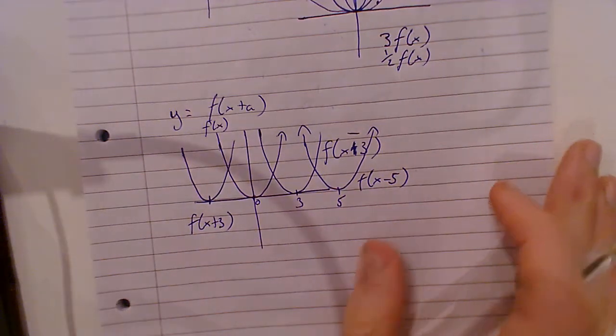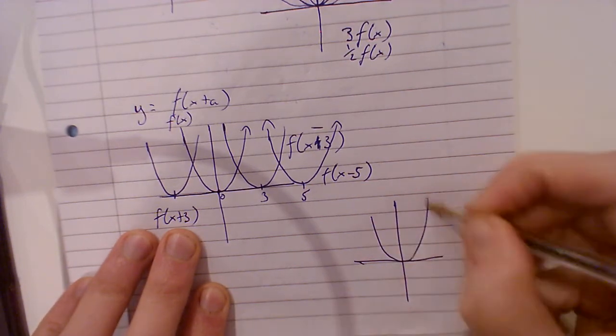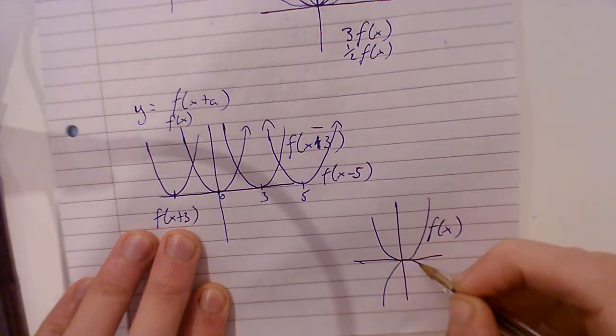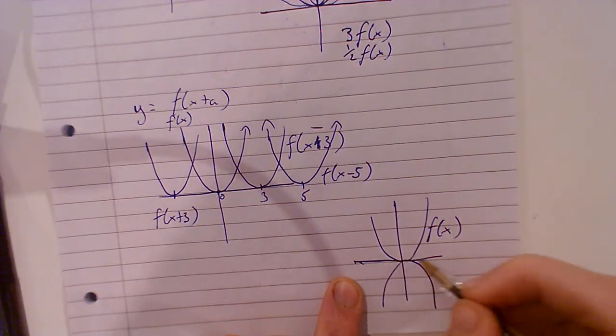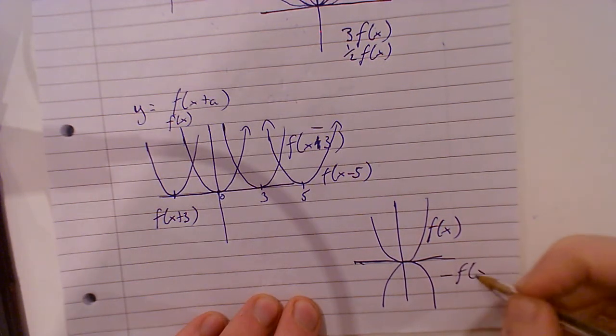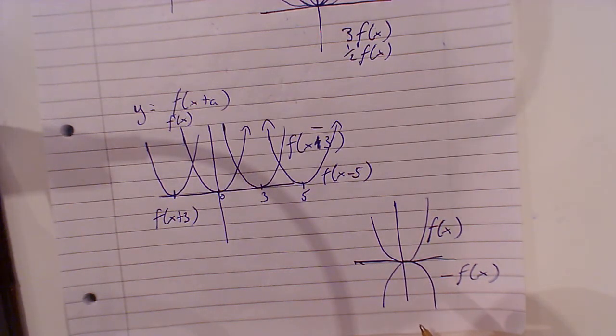Now if I tell you this is f of x, then minus f of x is like drawing a line straight across and mirroring it down — that's minus f of x. You could do your table out and draw it that way. If I'm giving you something here and this is f of x...